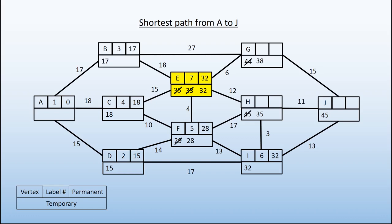We can get to G now in 38, so we replace that. And we can get to H. Well, 32 plus 12 is 44. We've got 35 already there, so we're going to leave the 35 there. We know we can get there in 35, which is shorter, so we'll leave that one alone. E is complete.